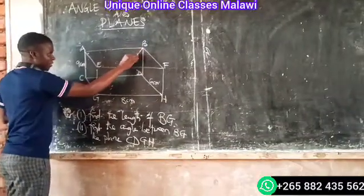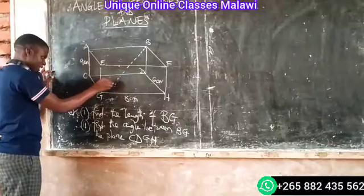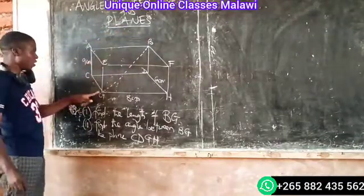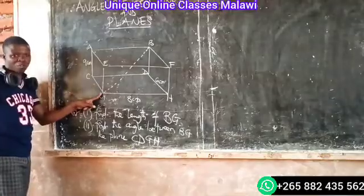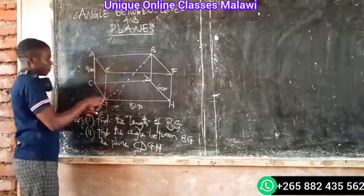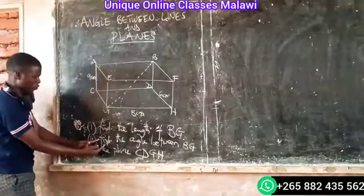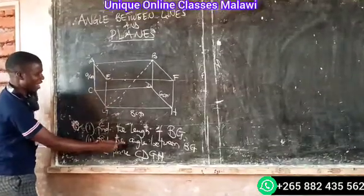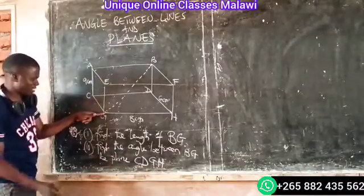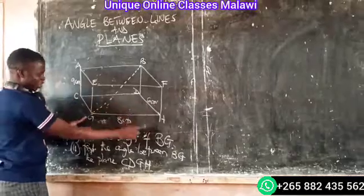You know that B is like the top corner — you know the corner where you go. We should find the angle between BG and the plane CDGH.